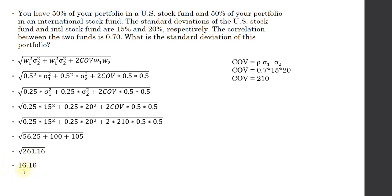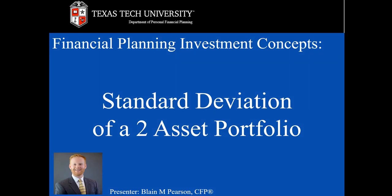One thing you may notice is the solution falls between 15% and 20%. This makes sense because the minimum it could be is 15% and the maximum it could be is 20%. Again, this is Blaine Pearson, and in this video we covered how to calculate the standard deviation of a two-asset portfolio. Thank you for watching.